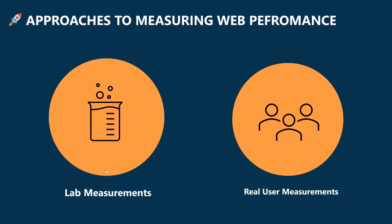We have multiple approaches to measuring web performance. We rely on both lab measurements and real user measurements. Lab measurements give us a consistent and reproducible method for evaluating web performance across various builds, and we rely on them as the first line of defense for any possible regressions. Ultimately, we rely on real user measurements as the source of truth for how our web apps perform in the wild, ensuring all users across the globe are benefiting from the work we're putting into making the web apps faster.